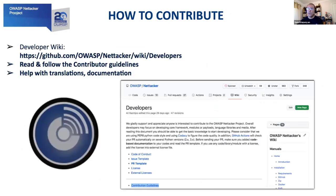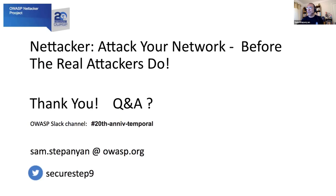Just like all OWASP projects, it is open source so we welcome contributions. If you want to contribute, please check out the developer wiki available on the documentation page. Do read and follow the contributor guidelines. If you know Python, you can help with coding. If you know YAML, you can help with the vulnerability modules. You can also help with translations and documentation if you want to contribute in a non-technical way. So that's it about NetTacker — please use it to attack your own network before the real attackers do. I'm now ready to take any questions. You can contact me via email or via Twitter at SecureStep9. Thank you.